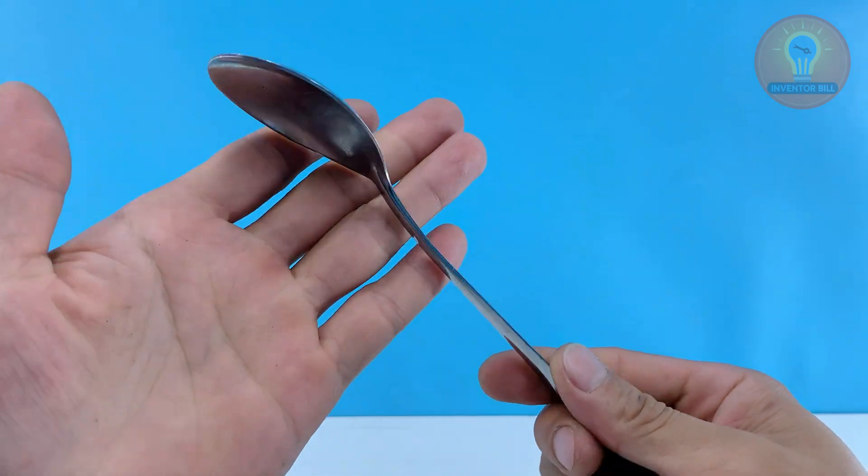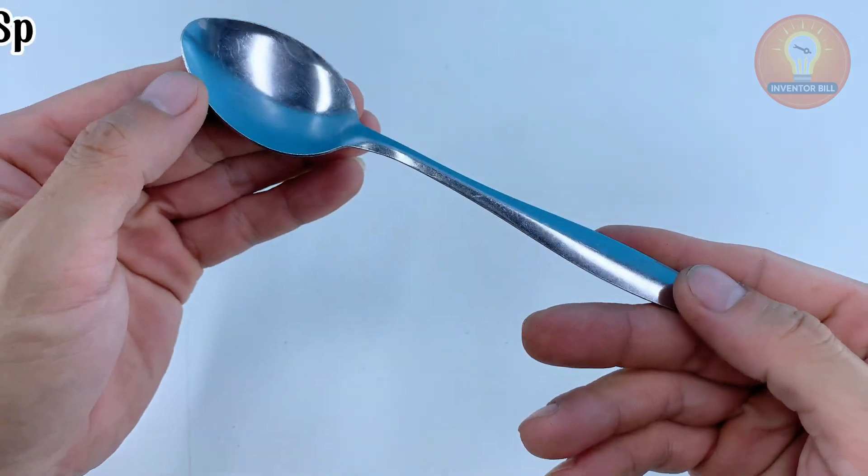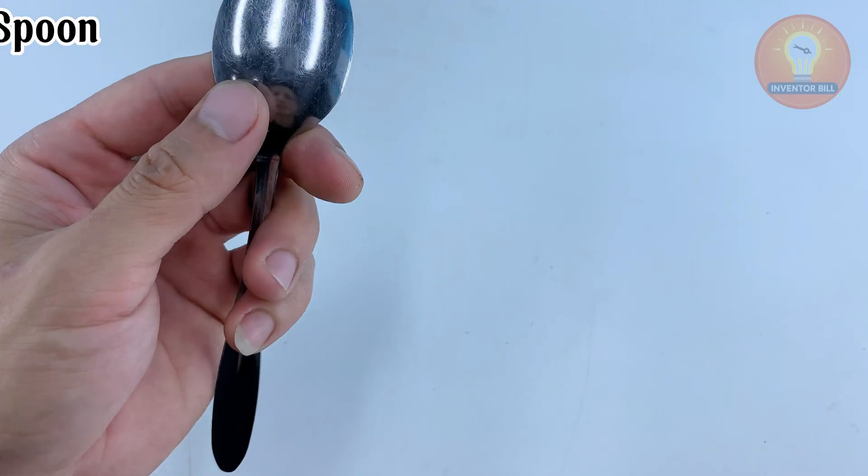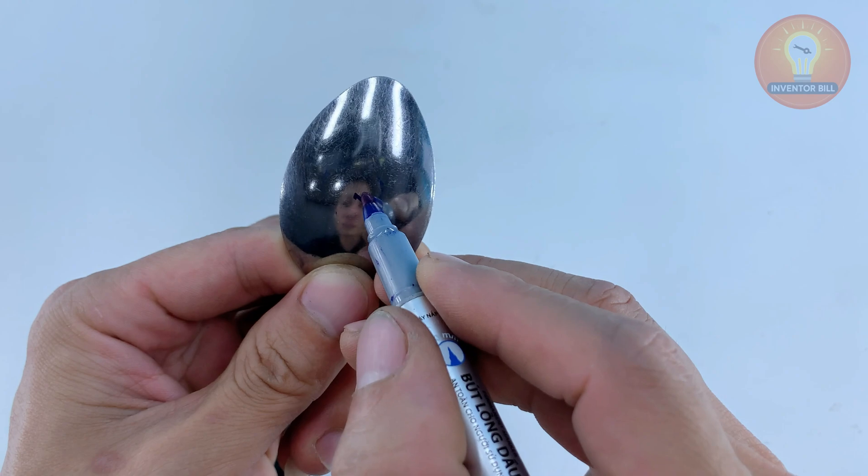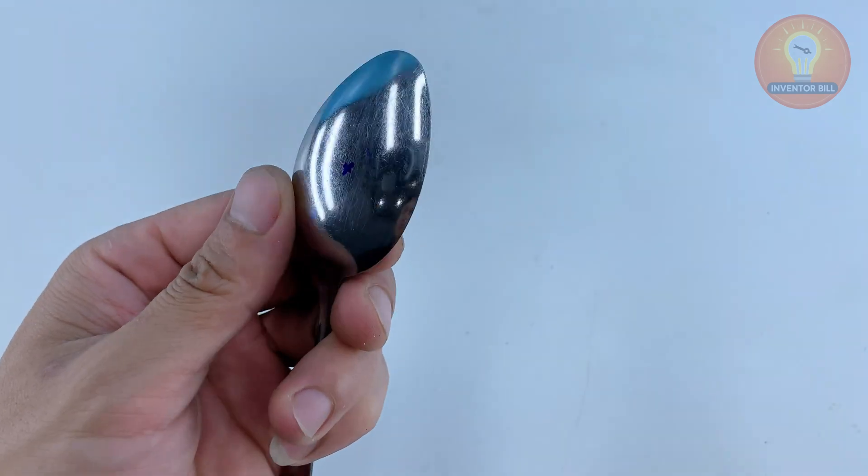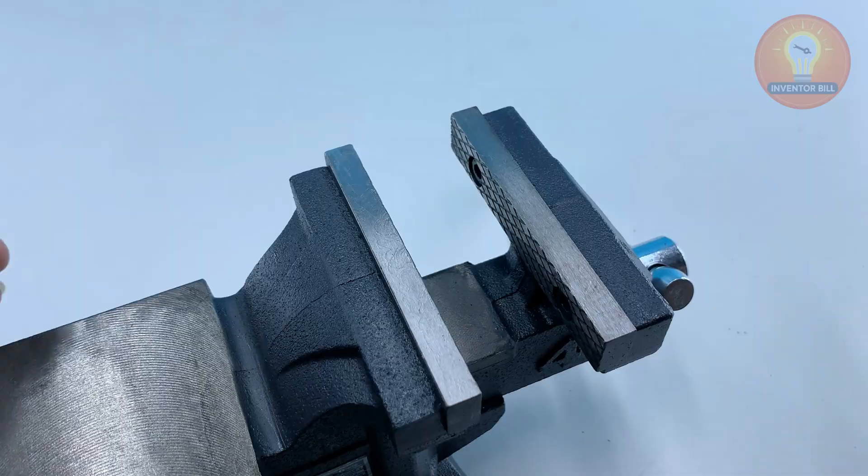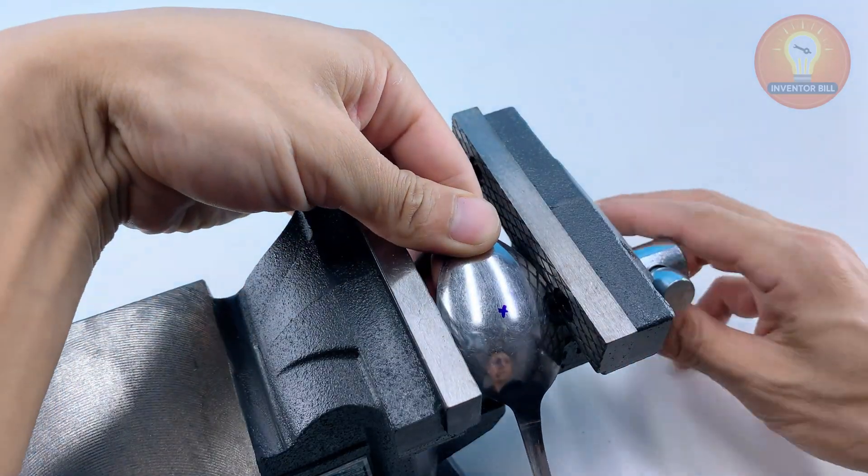You start building this homemade soldering tool by taking a stainless steel spoon and locking it firmly into your vise. Keep it steady so it doesn't move while you work.